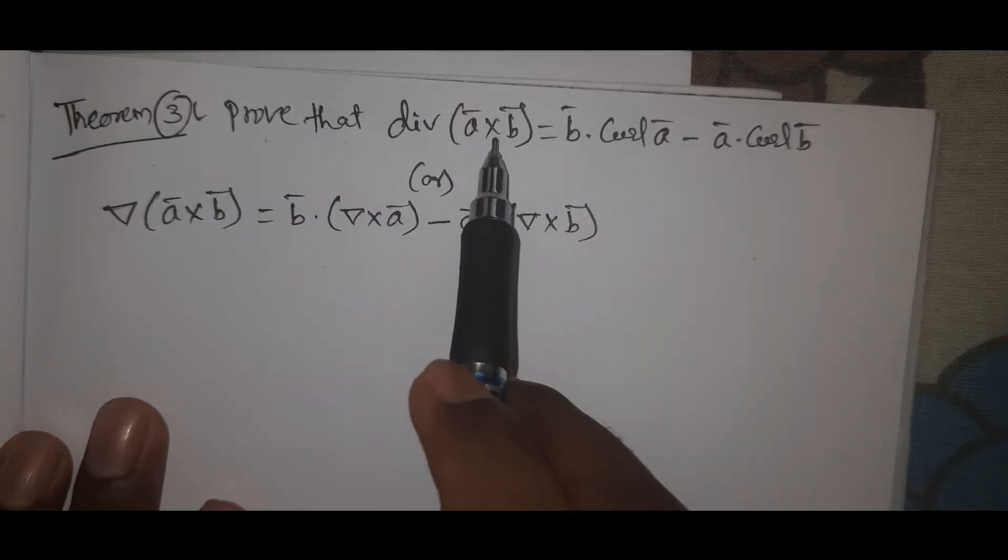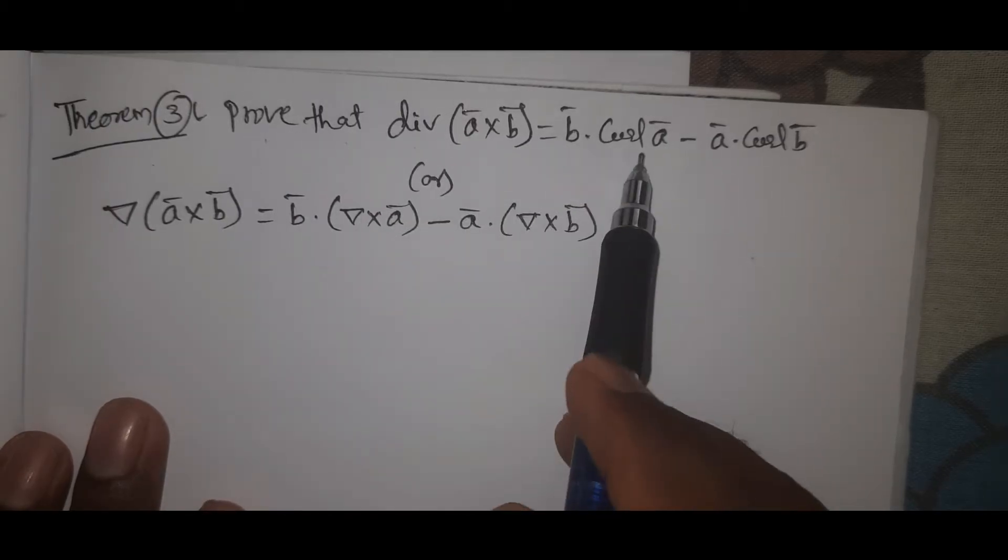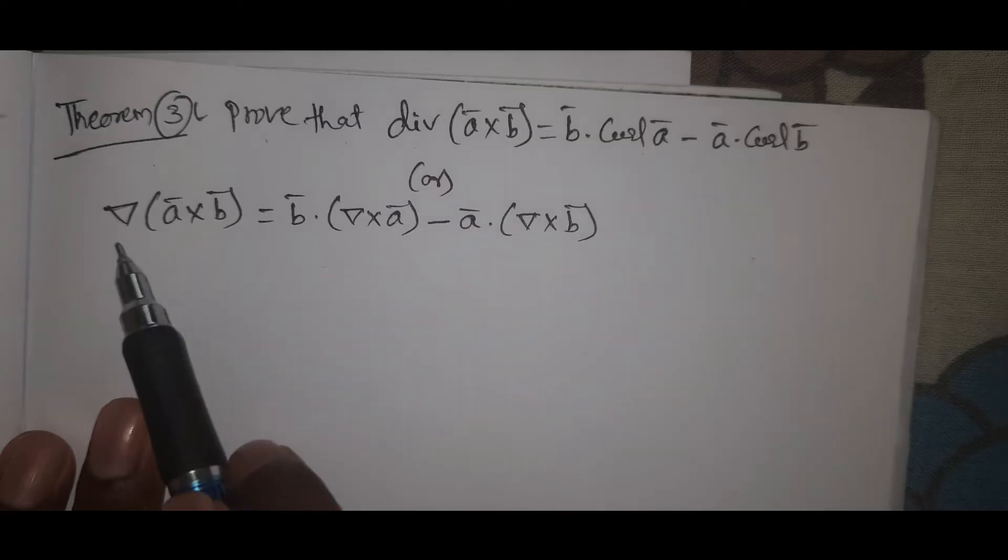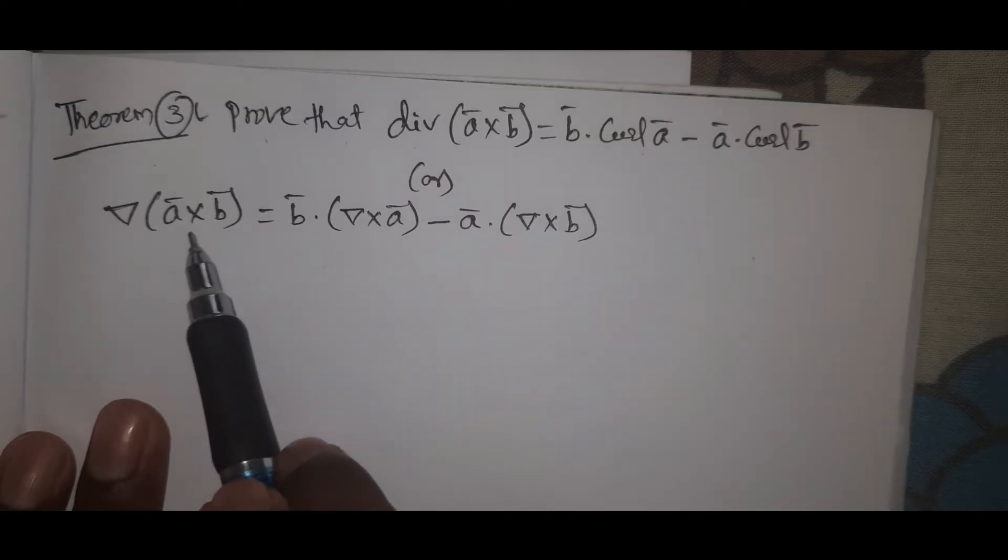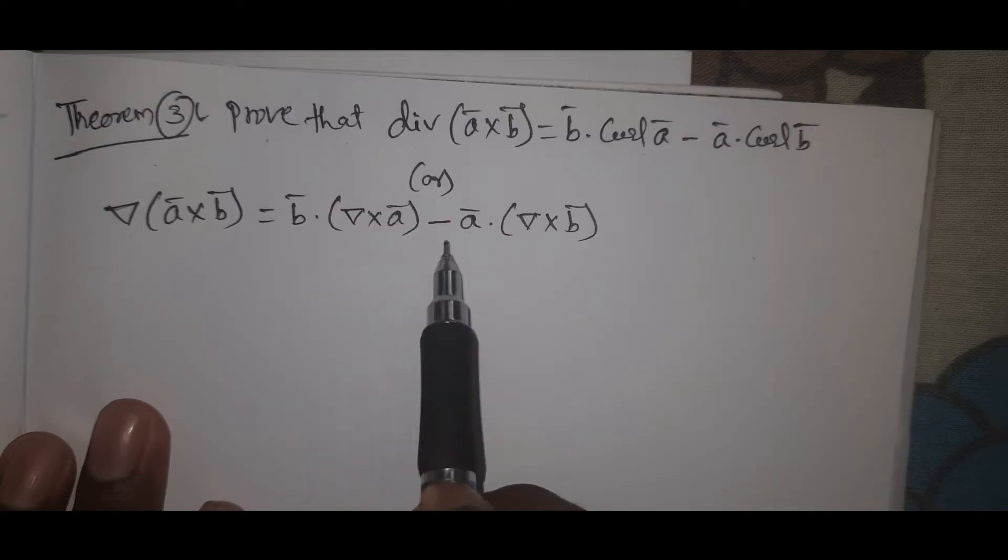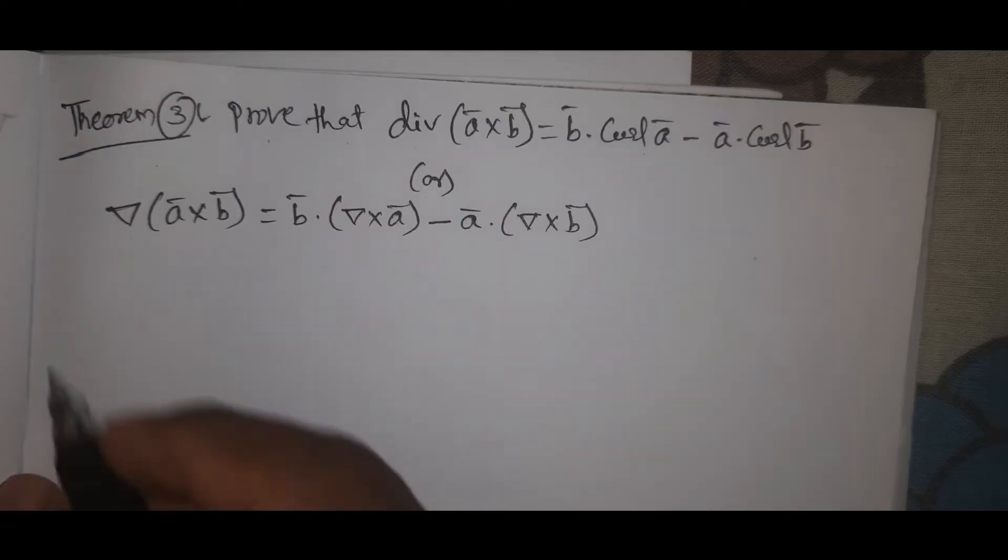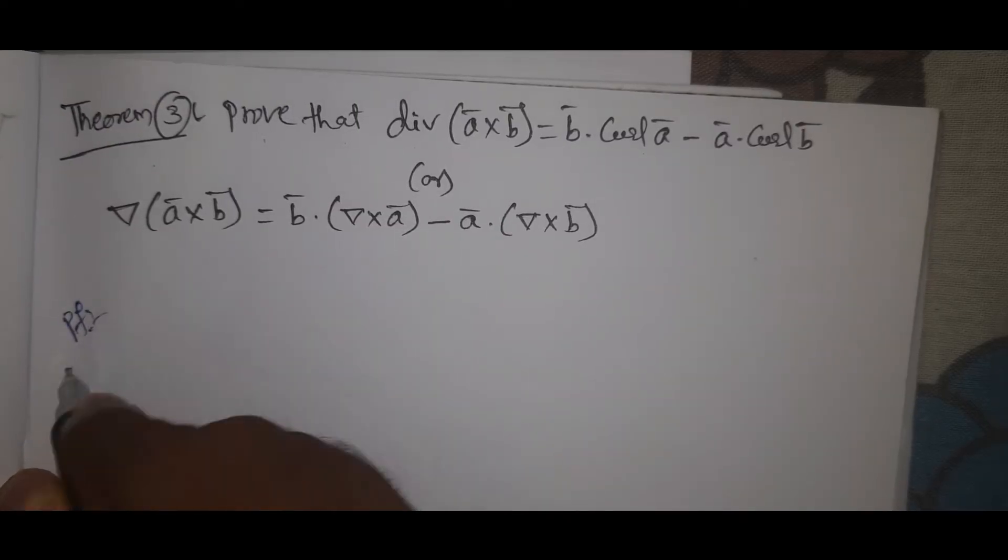Prove that divergent a bar cross b bar equal to b bar dot curl a bar minus a bar dot curl b bar, or del of a bar cross b bar equal to b bar dot del cross a bar minus a bar dot del cross b bar.